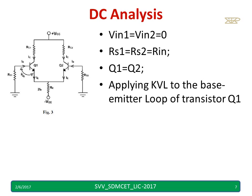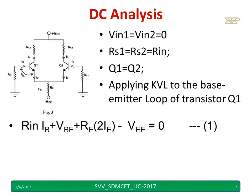Applying KVL to the base-emitter loop of transistor Q1, we get this equation. RIN into IB, plus VBE — the voltage across base and emitter. In RE we have two currents: one from Q1 and another from Q2's emitter, hence it is plus 2RE into IE, minus the emitter supply voltage VEE, equal to 0.